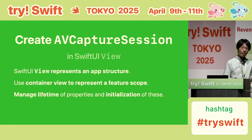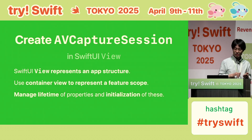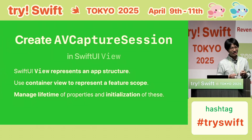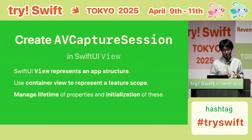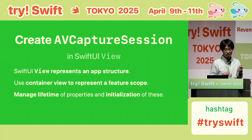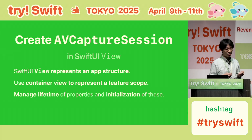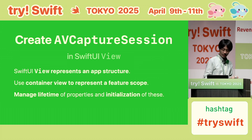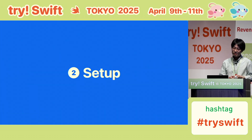Quick summary of Step 1: SwiftUI view isn't a view — it's an application structure. A container view can represent a feature scope. Use the @State property wrapper with controlled initialization to manage the session's lifetime. Great — now we have a session. Let's move on to Step 2.